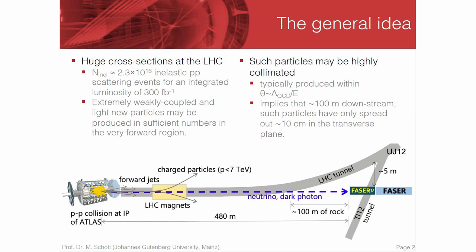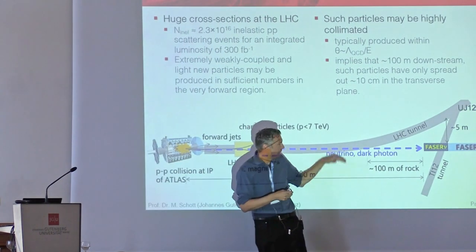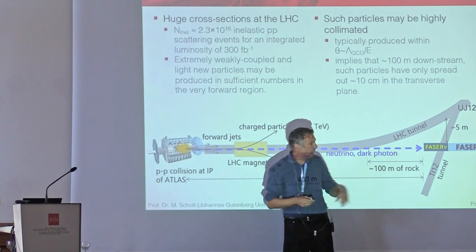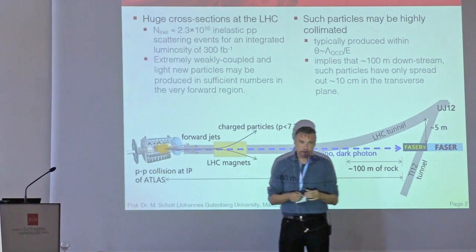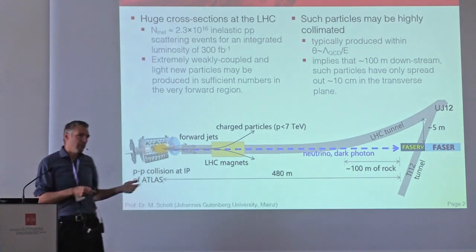Here's the ATLAS experiment, and now just assume we have lots of particles which are light produced in this direction. This can be new particles like dark photons or axion-like particles, but also neutrinos. All other light charged particles will be deflected by the LHC magnets. So everything which is neutral essentially just keeps on traveling and, since it's hopefully really reacting such as neutrinos, it goes through the rock and then hits the FASER experiment, which is installed in a side tunnel of the LHC. That's the basic idea.